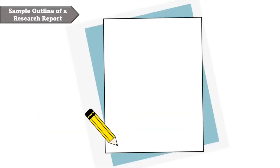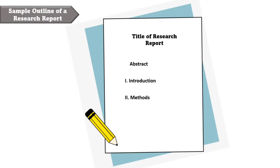This is a sample outline of a research report. It consists of the title of the research report, abstract, introduction, methods, results, and discussion. We will talk about each part in detail.